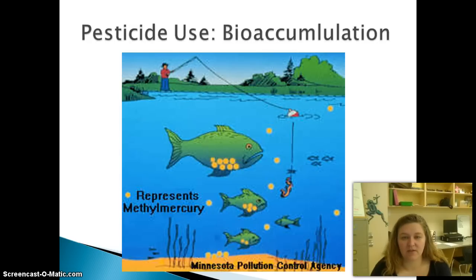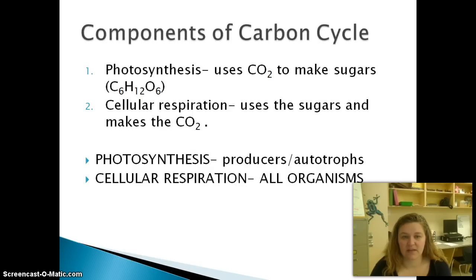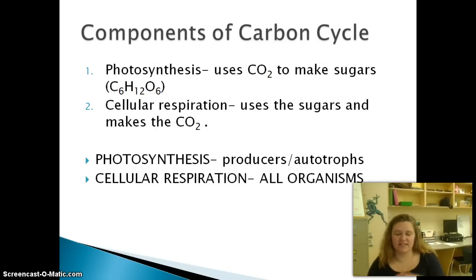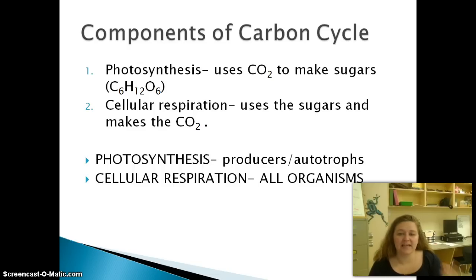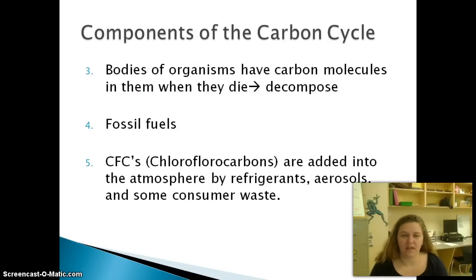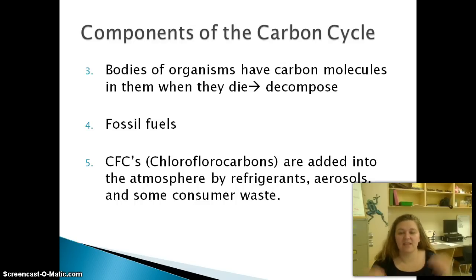We've talked about bioaccumulation before through pesticide use. Now let's talk about the carbon cycle. It starts with photosynthesis — the plants take in CO2 and use it to make sugars and oxygen. Then consumers take in that oxygen and those sugars from plants and make CO2, so it's a big cycle. All bodies of organisms have carbon molecules in them; when they die and decompose, those carbon molecules go down into the ground and start to build fossil fuels.